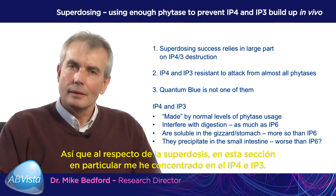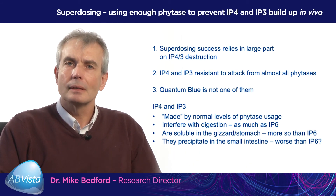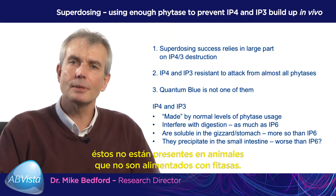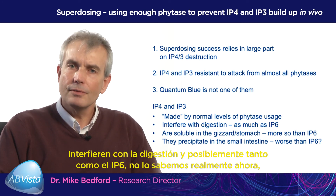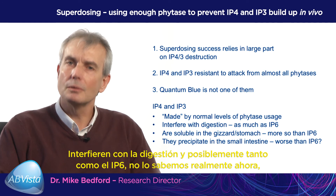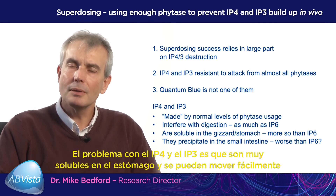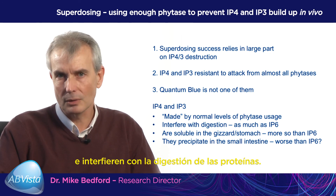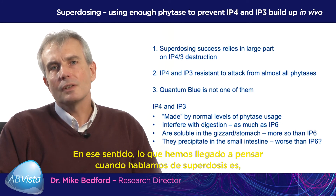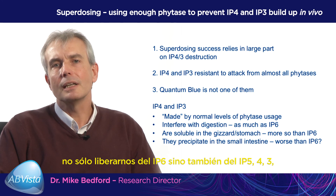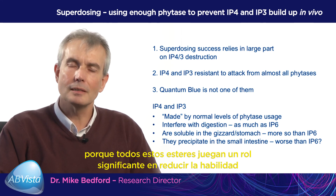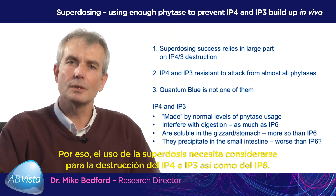With respect to superdosing, IP4 and IP3 are made by normal phytase usage levels — they are not present in animals not fed phytase. They interfere with digestion possibly as much as IP6, and we know they are anti-nutritive. IP4 and IP3 are very soluble in the stomach and can move easily into the small intestine where they precipitate with zinc and interfere with protein digestion. When thinking about superdosing, we must consider not just eliminating IP6 but also IP5, IP4, and IP3, because all of these esters play a significant role in reducing the animal's ability to digest its feed effectively. Superdosing needs to consider destruction of IP4 and IP3 just as much as it does IP6.